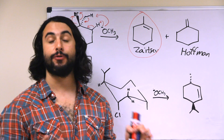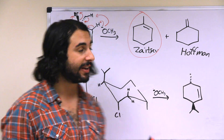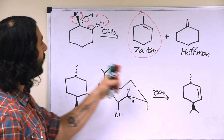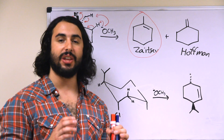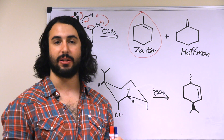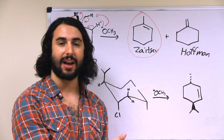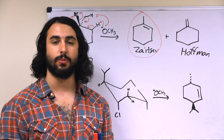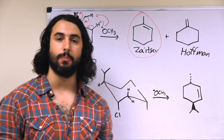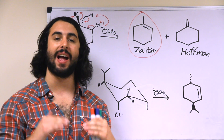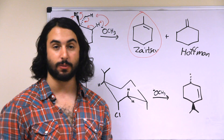Now if the base were significantly sterically hindered, such as tert-butoxide, then we might expect the Hoffmann product to dominate even though it is less thermodynamically favorable, because kinetics would then drive the reaction. Tert-butoxide would be able to access the less hindered proton with much more ease due to a lower activation energy associated with that acid-base reaction.